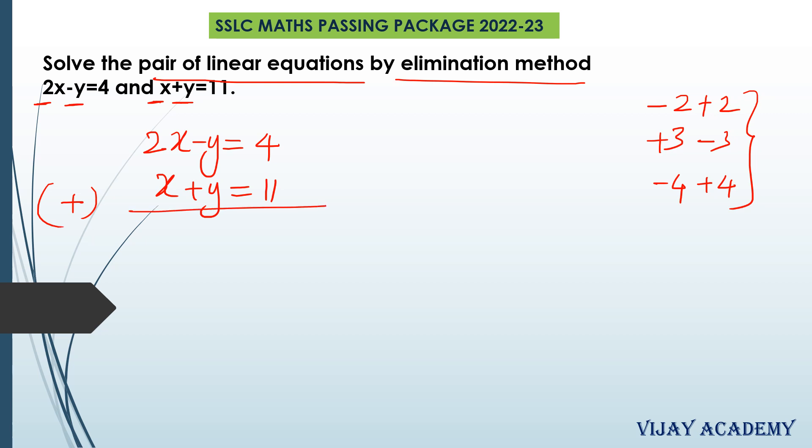On adding the equations, we get 2x plus x is 3x, minus y and plus y is 0. That is equal to 4 plus 11 is 15.